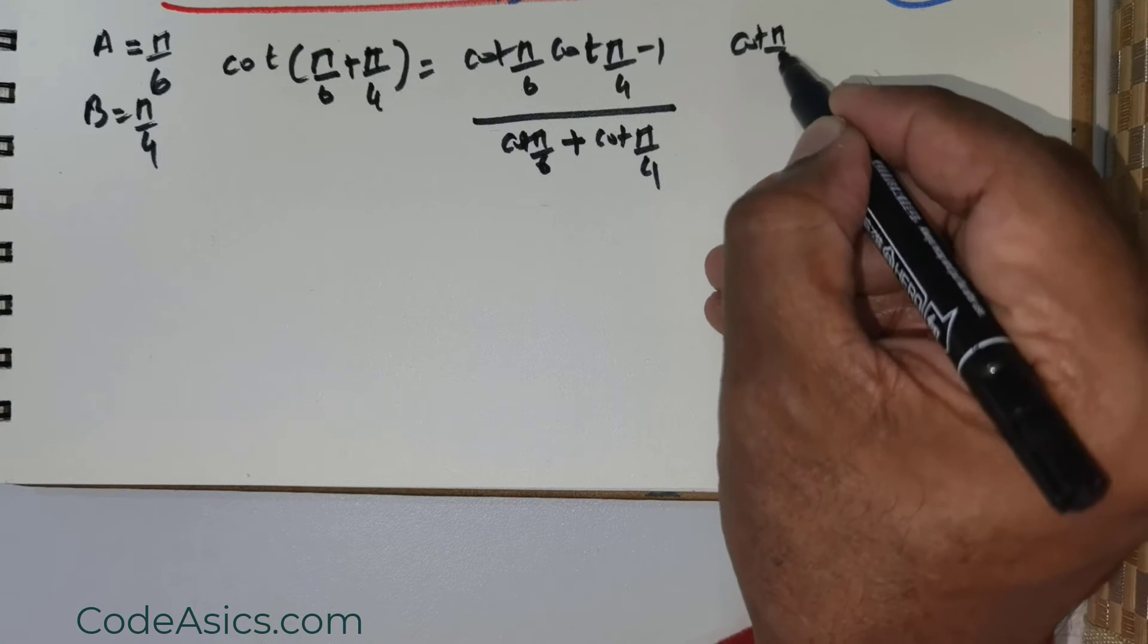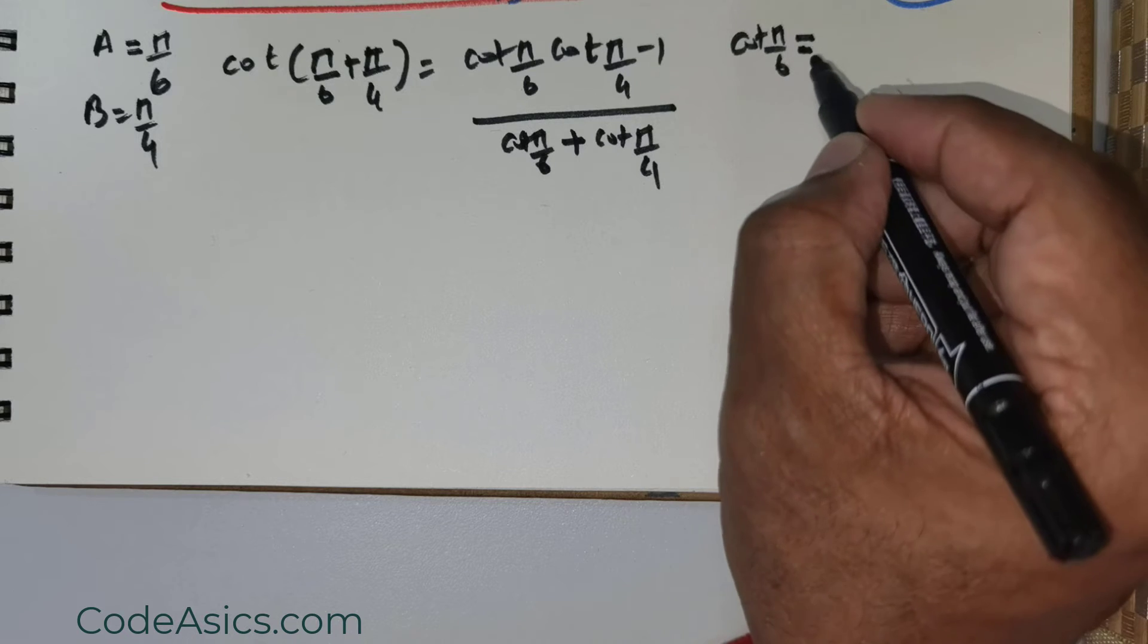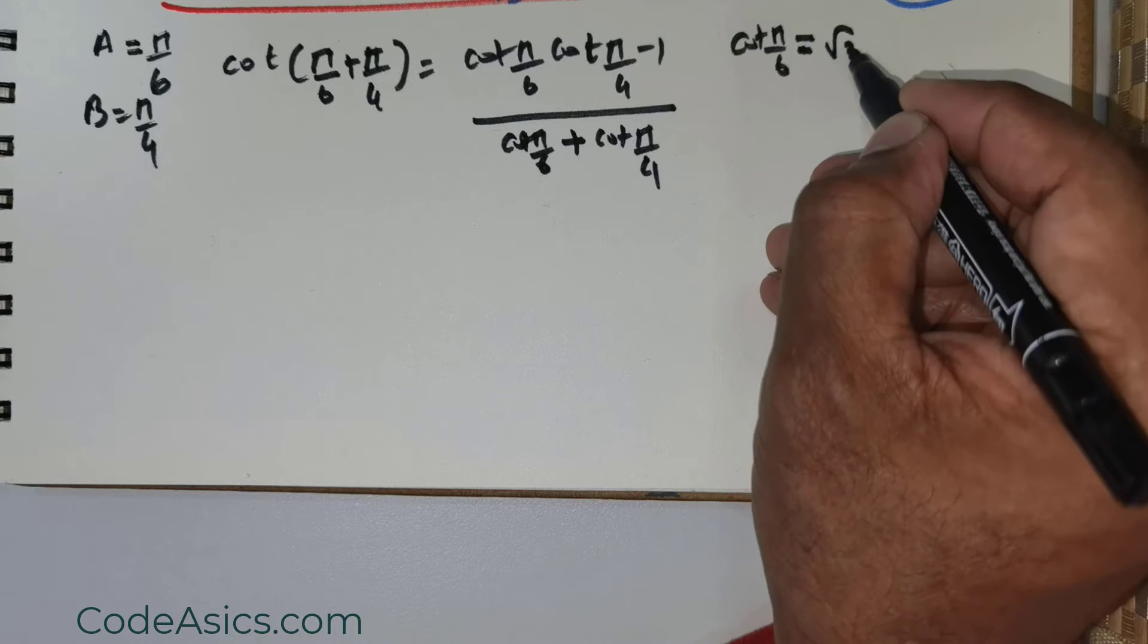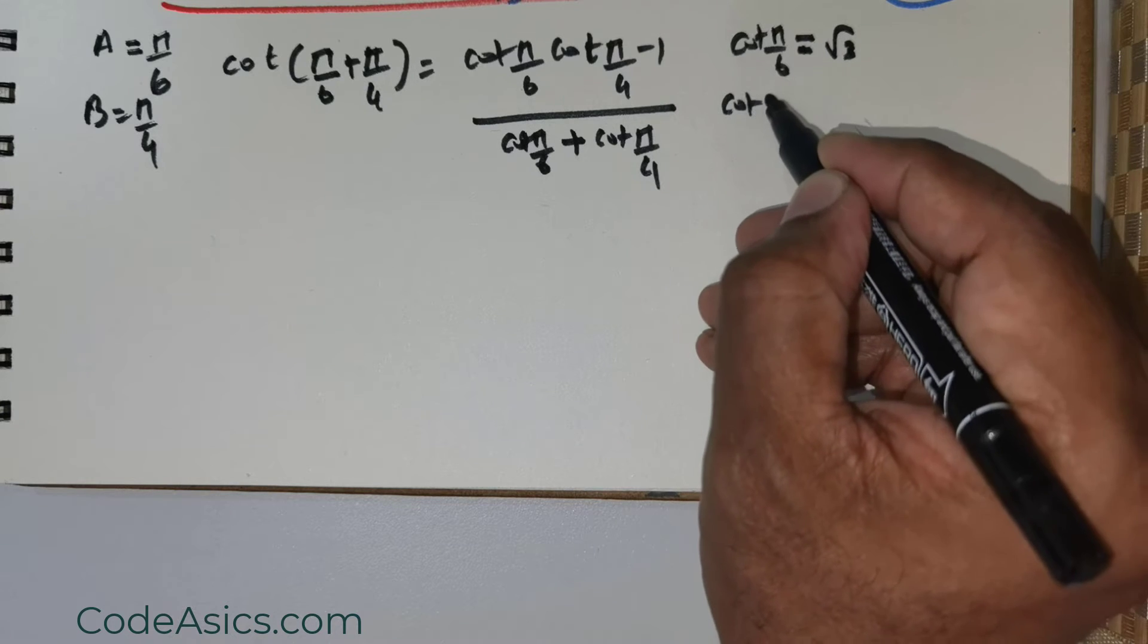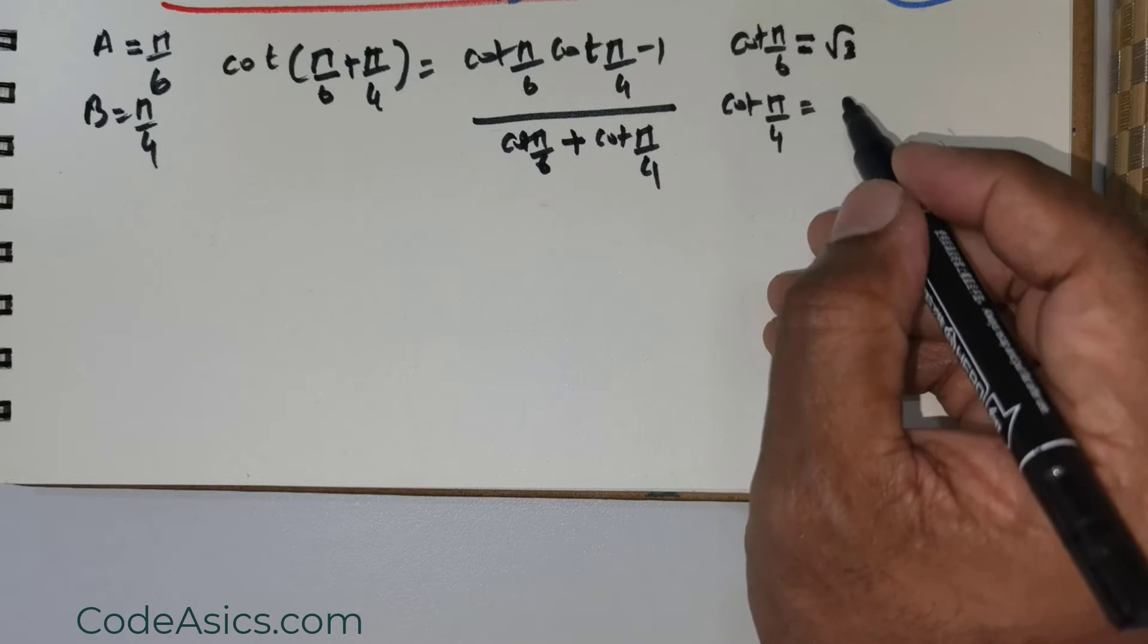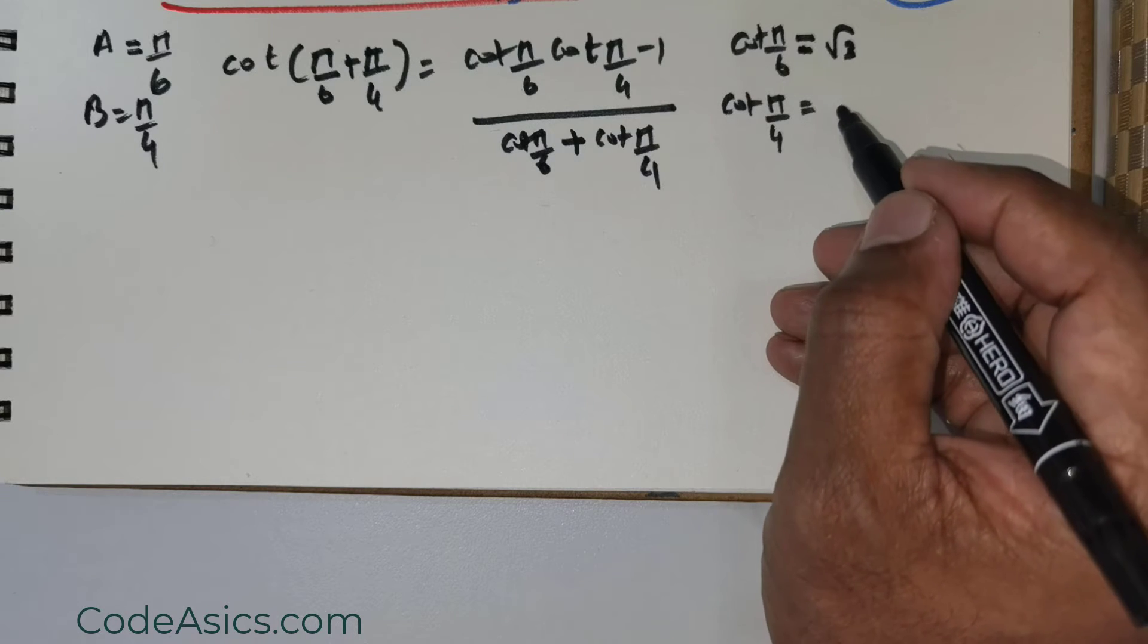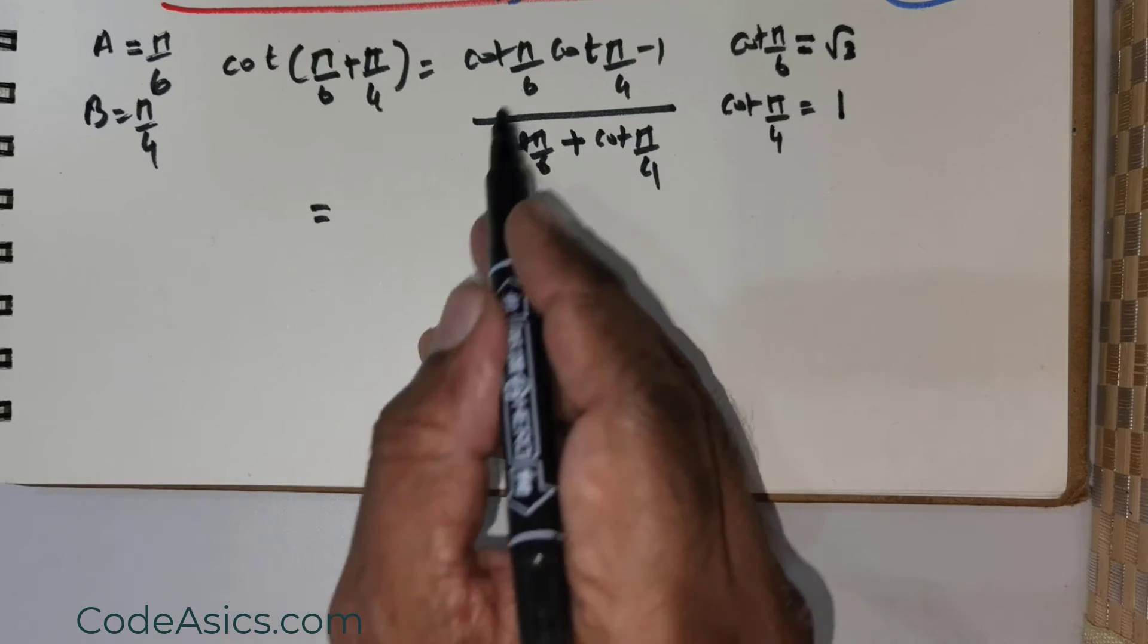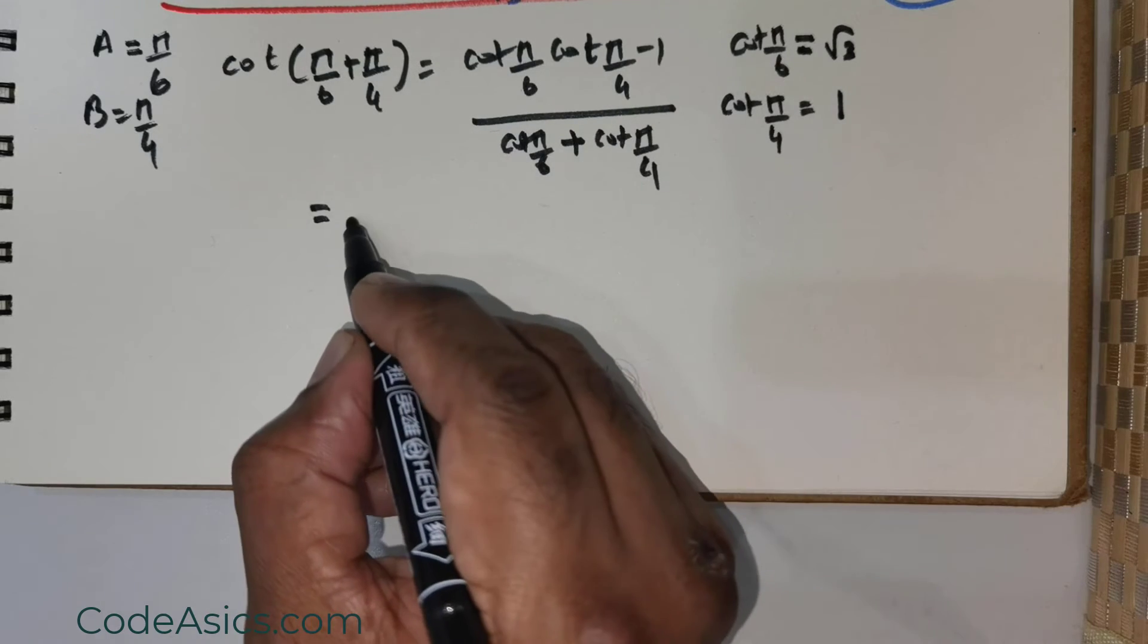Now cot(π/6) is nothing but cot(30°), which is √3. And cot(π/4) is nothing but cot(45°). Tan(45°) is 1, so cot(45°) is also equal to 1.